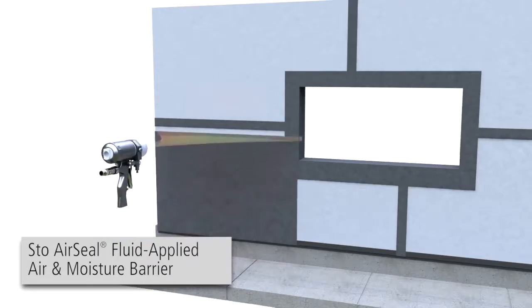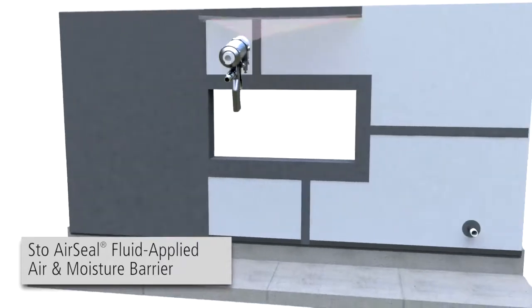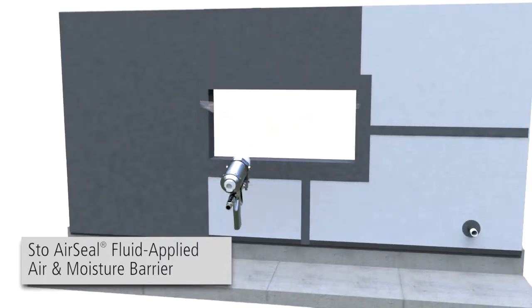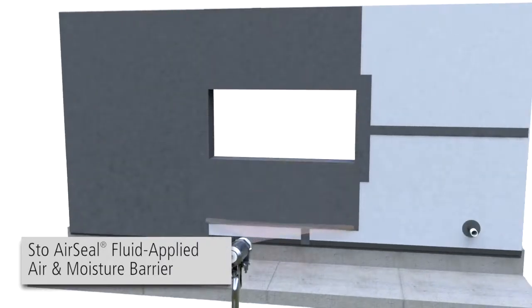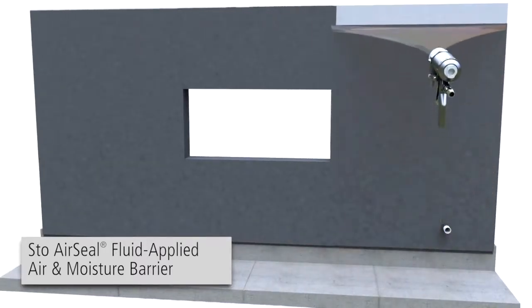Stowe AirSeal is a fluid-applied air and moisture barrier that can be applied by spray or roller to a variety of substrates to create a continuous, seamless, waterproof air and moisture barrier beneath the Stowe Ventec rain screen system.